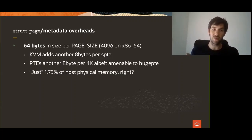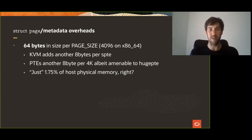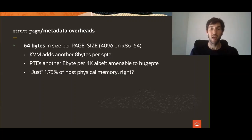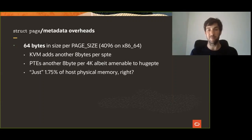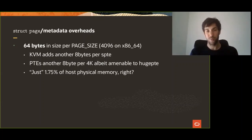On top of the structure, you have other overheads: you spend 8 bytes per EPT entry, and in the process page tables you spend about 8 bytes as well per HPT entry. Although these costs can be amortized when you try to use huge pages, which amortize the page table cost to a great extent. So when you put it all together, we are talking about 1.5% to 1.75% of total physical memory, which at first glance does not look like much.